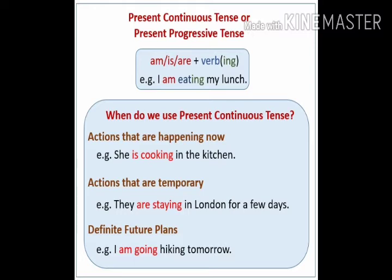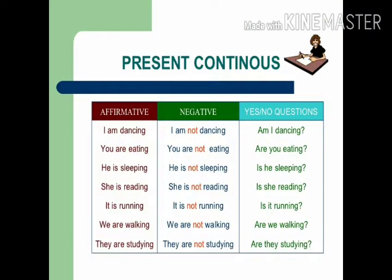When do we use present continuous tense? First, when actions are happening now — for example, 'She is cooking in the kitchen.' Second, actions that are temporary — for example, 'They are staying in London for a few days.' Third, definite future plans — for example, 'I am going hiking tomorrow.' Now we will see how to write the statement, negative sentence, and yes/no questions in present continuous.